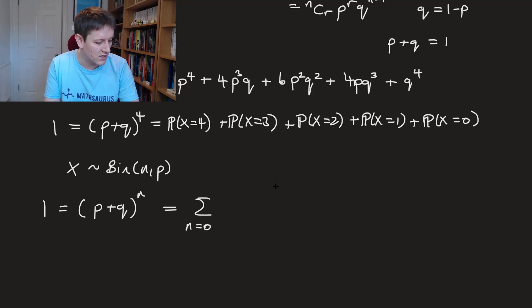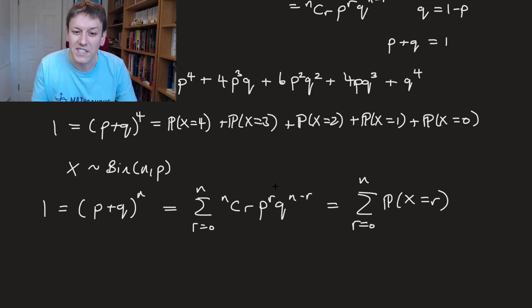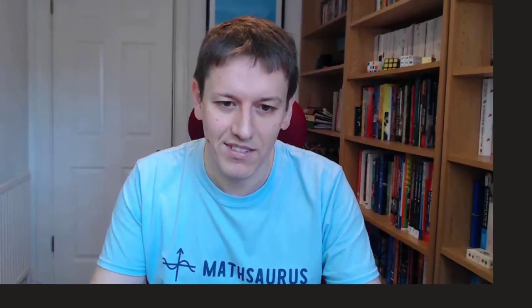So in the binomial expansion notation, that's the sum from r equals 0 to n of n choose r times p to the r times q to the n minus r. Writing that in terms of probabilities, that's the sum from r equals 0 to n of the probability that X equals r. So effectively, the binomial expansion here is just saying, actually justifying the fact that this way of describing binomial probabilities makes the binomial distribution a proper probability distribution, in the sense that all of the probabilities must always add up to 1.